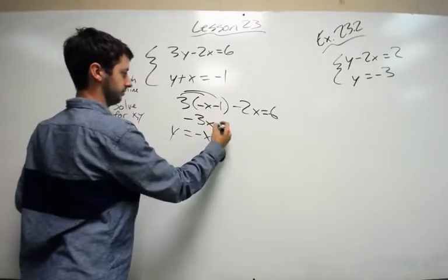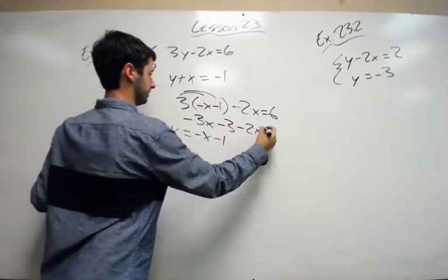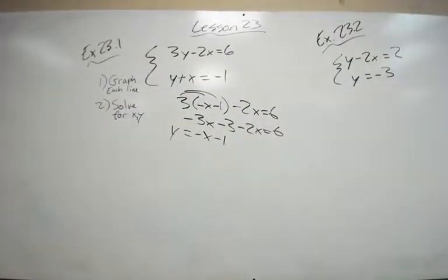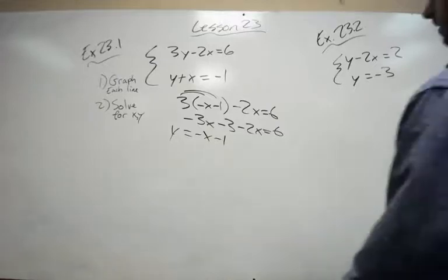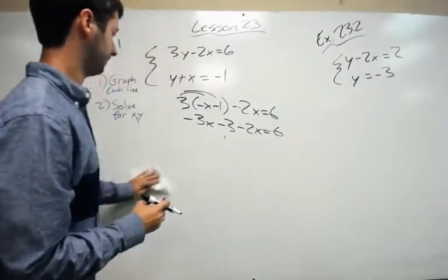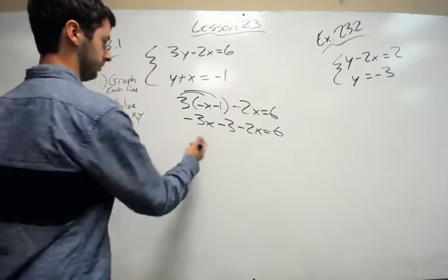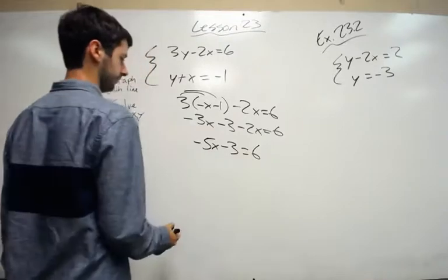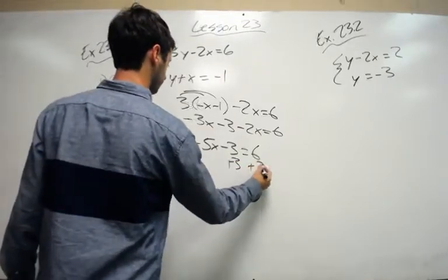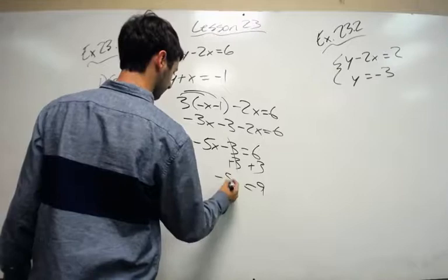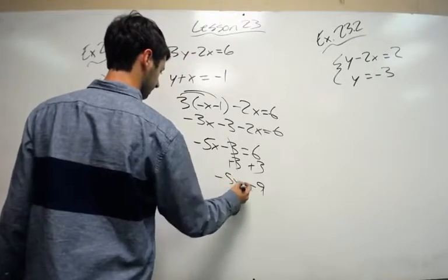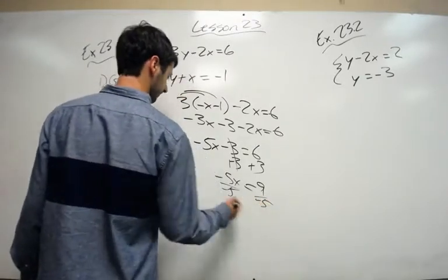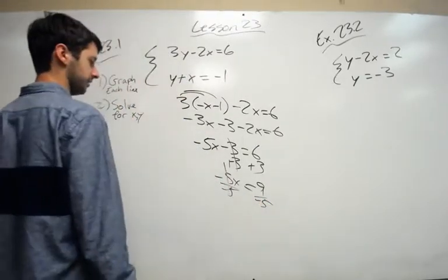Negative 3x minus 3 minus 2x equals 6. Combine the like terms. Negative 5x minus 3 equals 6. Add 3. 9 equals negative 5x. Divide by negative 5. And x equals negative 9 over 5.